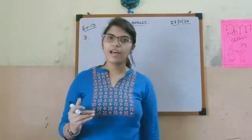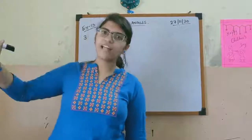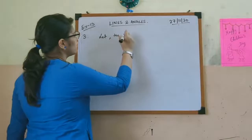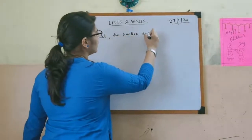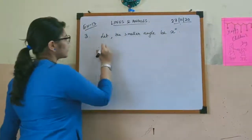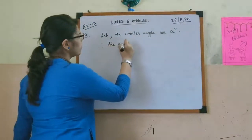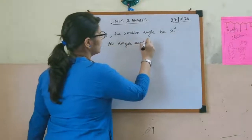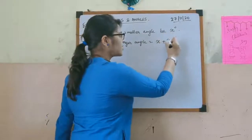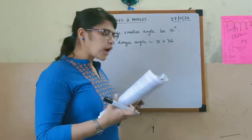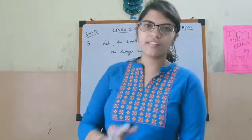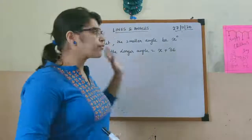So the larger angle is 36 degrees more than the smaller angle. Let the smaller angle be x degrees. Therefore the larger angle will be x degrees plus 36 degrees. Now these two angles together form 180 degrees because they are supplementary, and we need to find both angles.